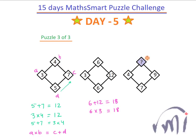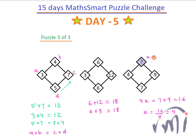If I assume the value of this box to be x, then 4 multiplied by x equals 7 plus 9, which is 16. So x equals 16 divided by 4, which is equal to 4. The value of this box will be equal to 4.